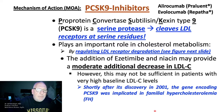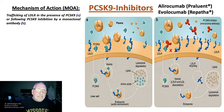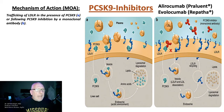Shortly after its discovery in 2001, the gene encoding this serine protease was implicated in familial hypercholesterolemia. Alirocumab and evolocumab are monoclonal antibodies, and they affect the trafficking of the LDL receptor.